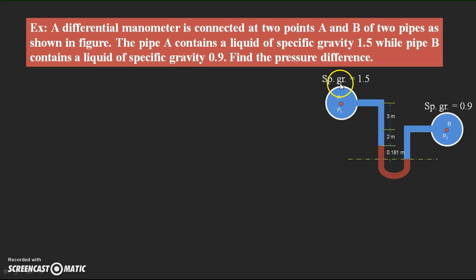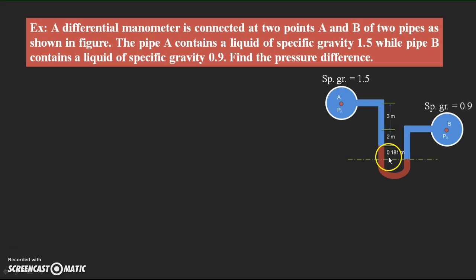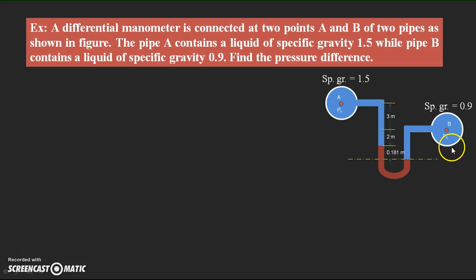The specific gravities are given as 1.5 and 0.9 respectively. The vertical distance between the two pipes is 3 meters, the level difference of the mercury is 0.181 meters, and the remaining distance from the mercury level in the left limb to the center of pipe B is 2 meters. With this given information we need to find out the pressure difference between pipe A and pipe B.